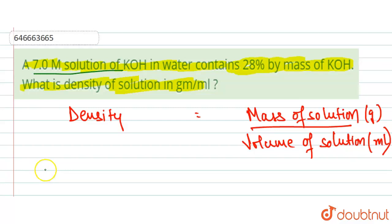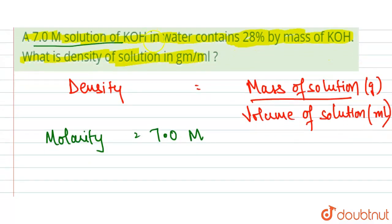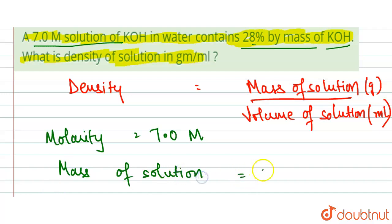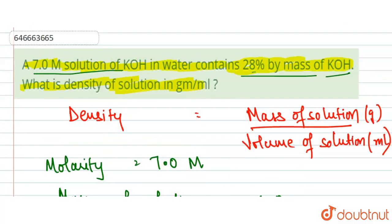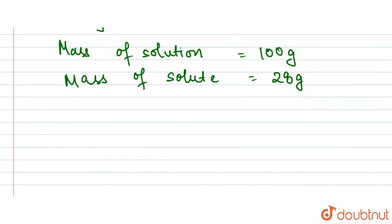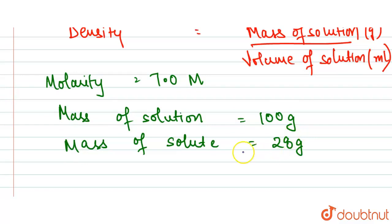We are given that the molarity is 7.0 molar, and the solution contains 28 percent by mass of KOH. If we take the mass of the solution to be 100 grams, then the mass of the solute (KOH) will be 28 grams.